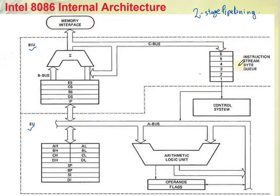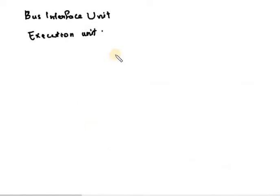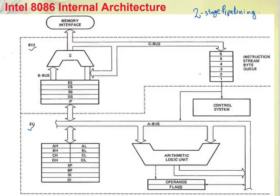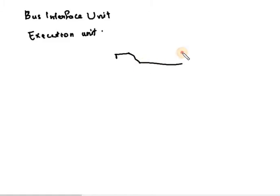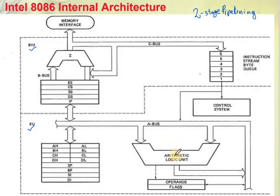We will discuss the Bus Interface Unit. You can see a summation sign or sigma symbol in this figure. Normally we call it an ALU symbol, but one microprocessor has a single ALU — the arithmetic logic unit. This sigma symbol here represents another unit called the address generation unit.